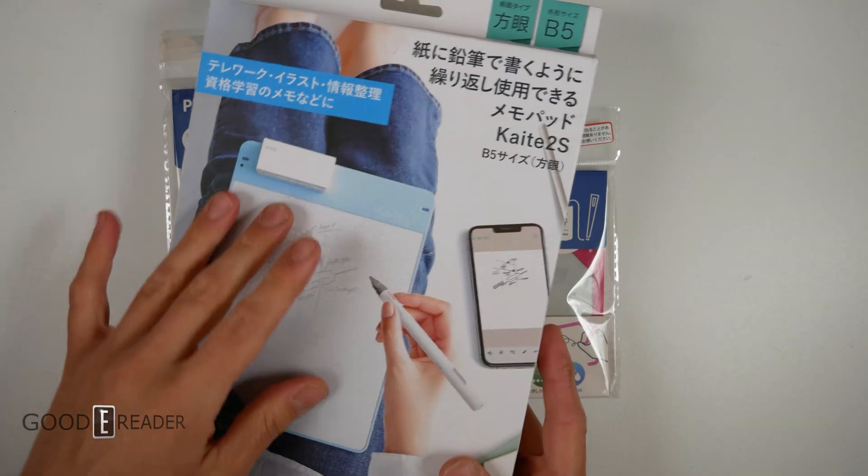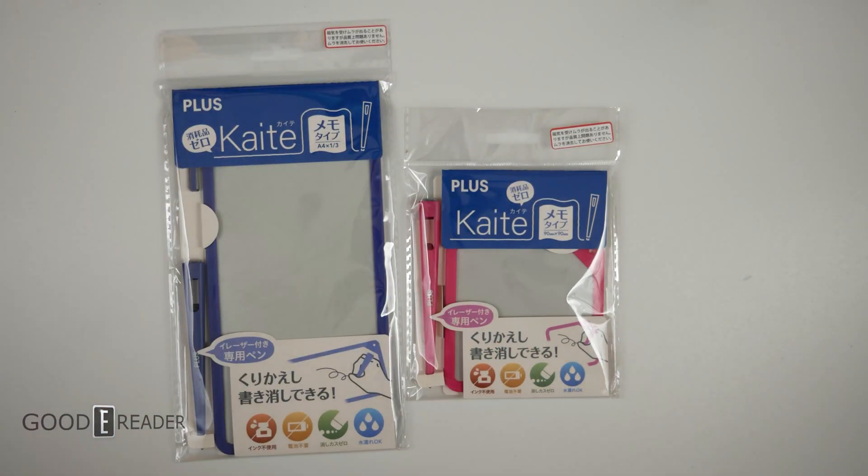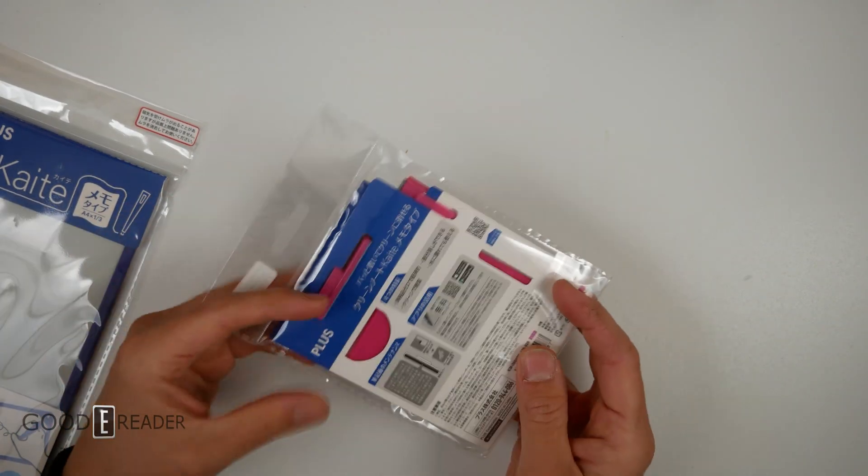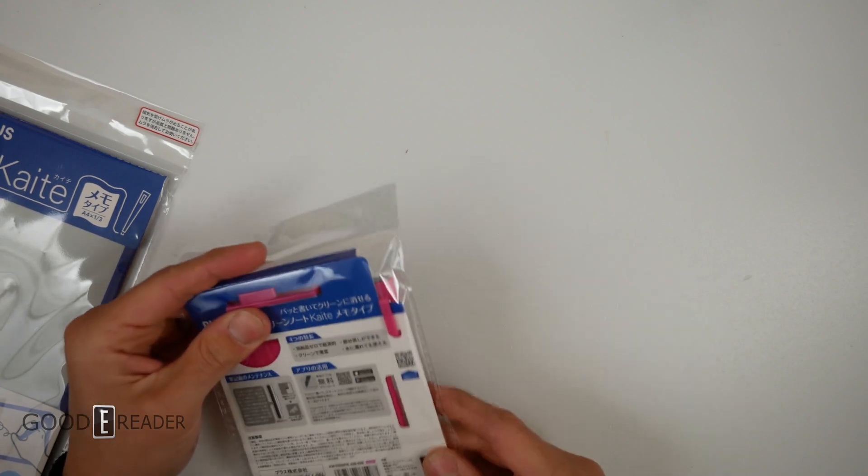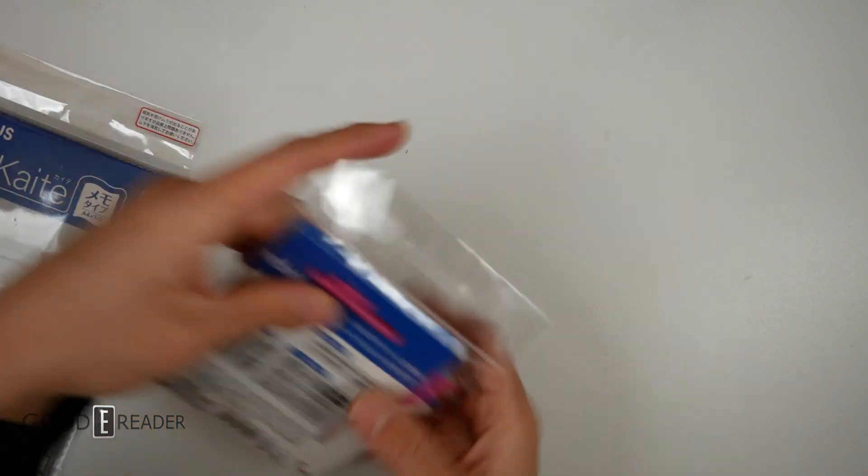They have grid, they have clean, they have A4, they have A5, 13.3s, 10.3s, etc. So they have a lot of stuff. Let's go ahead and open these up and unbox them and look at them and do a full review all in one because these are pretty simplistic.